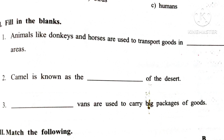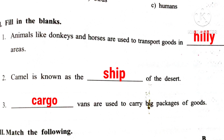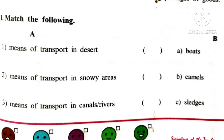Roman number 2 — Fill in the blanks. 1st: Animals like donkeys and horses are used to transport goods in dash areas — Answer: Hilly areas. 2nd: Camel is known as the dash of the desert — Answer: Ship of the desert. 3rd: Dash vans are used to carry big packages of goods — Answer: Cargo vans. Roman number 3 — Match the following. 1st: Means of transport in desert — Answer: Option B, Camels. 2nd: Means of transport in snowy areas — Answer: Option C, Sledges. 3rd: Means of transport in canals and rivers — Answer: Option A, Boats.